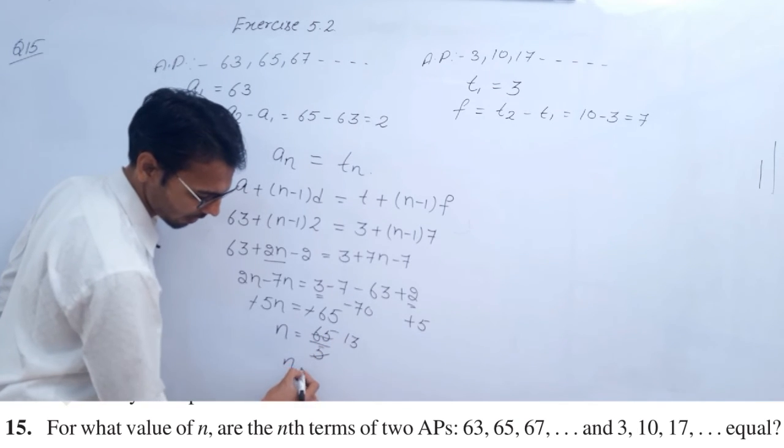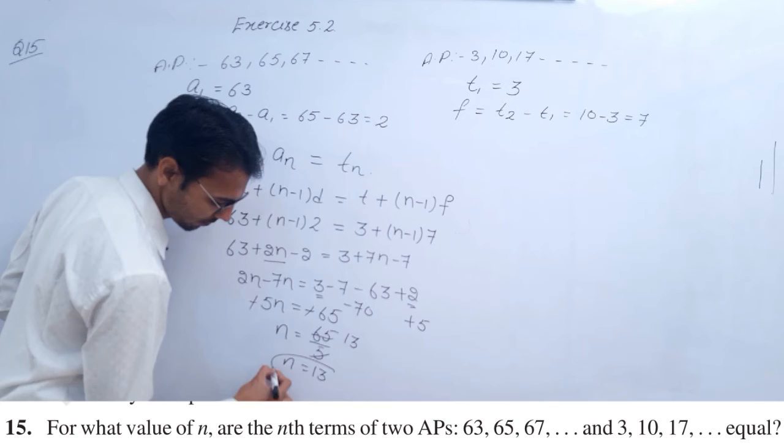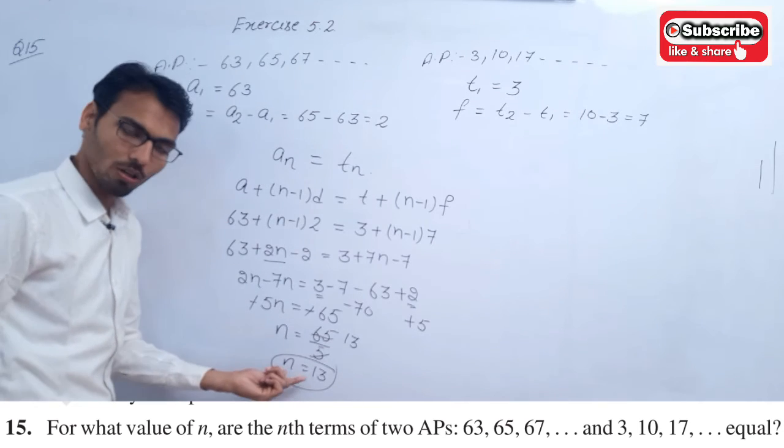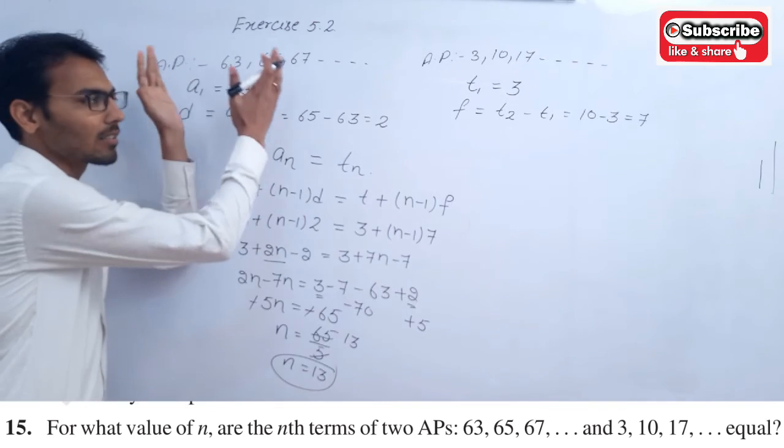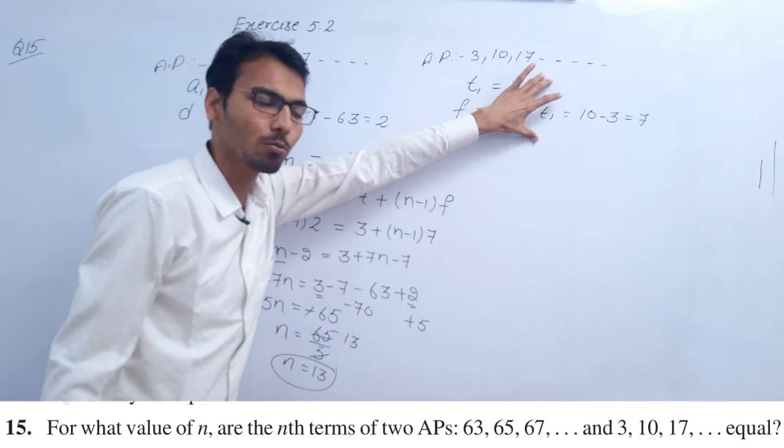So n equals 13. For n=13, the thirteenth term of both APs will be equal and the same.